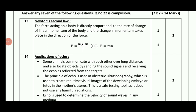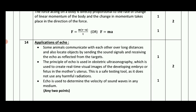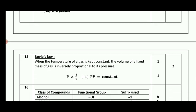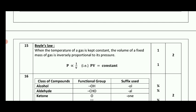The next answer is 2 marks. When the temperature of gas is kept constant, the volume of a fixed mass of gas — PV is equal to constant. If you write it down below the formula, you can write it down for the mark.